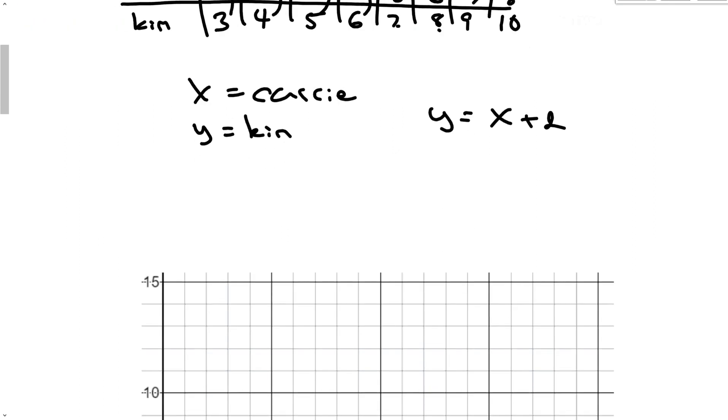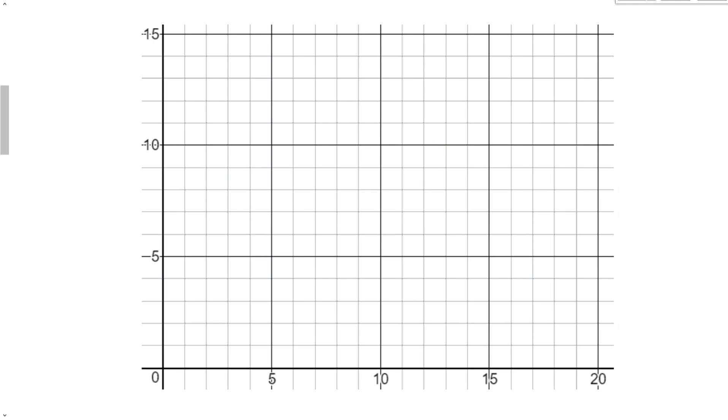This can also be represented with a graph, with a linear function. So when Carrie was one, Kim was three. So I can put a dot right there. I can put a dot right there. I can put a dot right there. When Carrie was born, Kim was turning two. When Carrie was two, Kim was turning four. Carrie was three, five. And we can see what's happening with all my ages right here. And this graph is going to give me a nice, perfectly straight line.